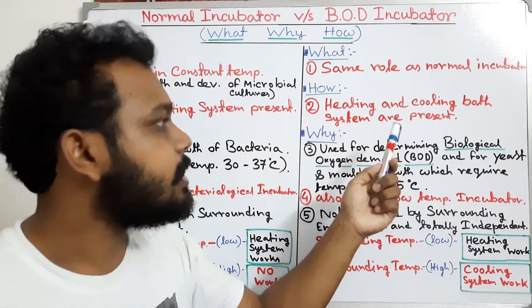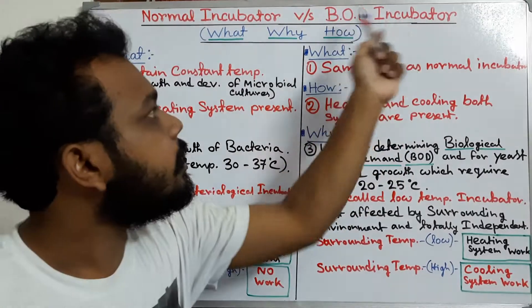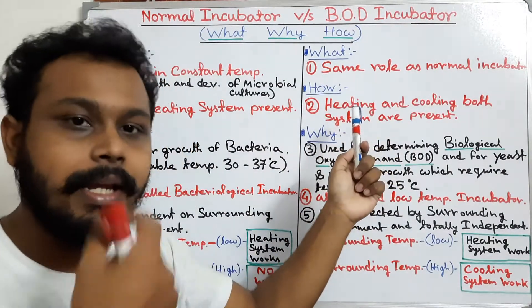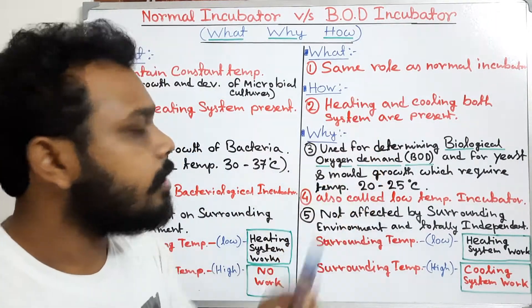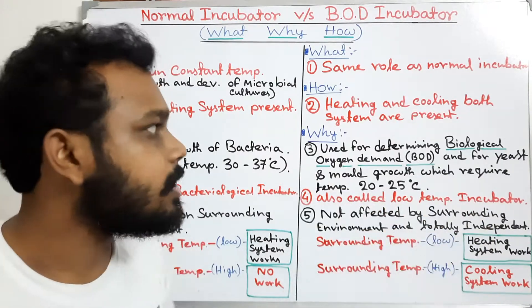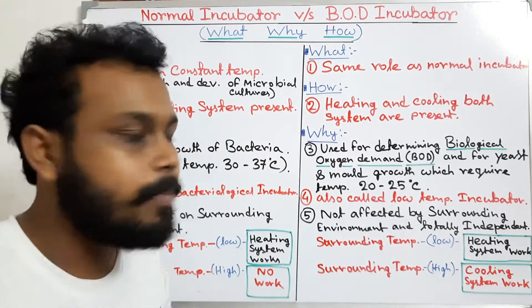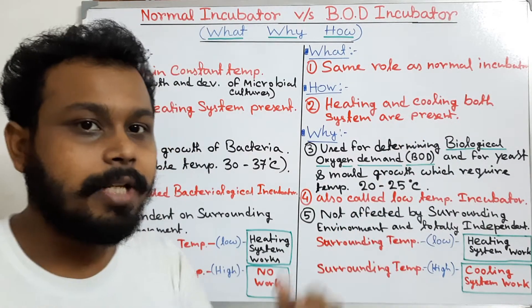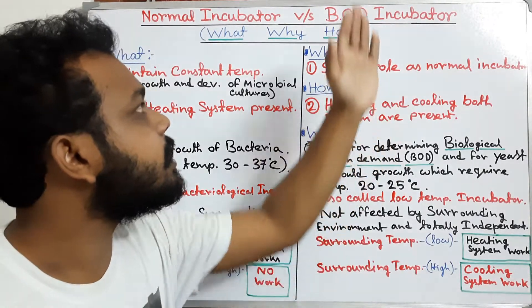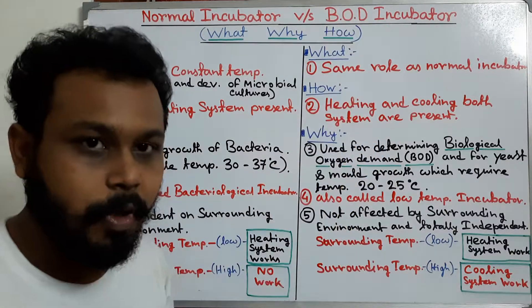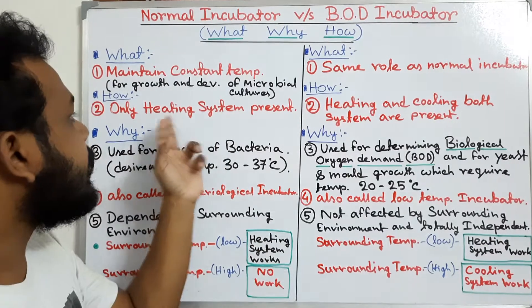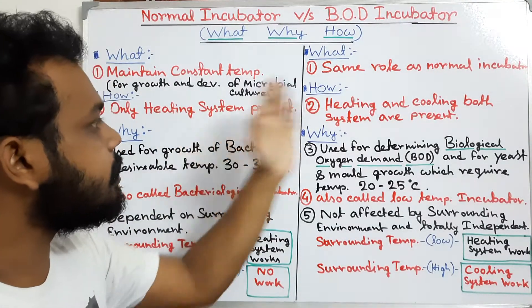The BOD incubator has a heating system that can achieve temperatures higher than room temperature, and also a cooling system that can maintain temperatures lower than room temperature. So both systems are present in the BOD incubator, but in the normal incubator only the heating system is present. That is the main difference between them.